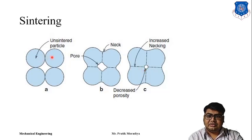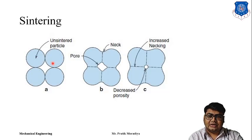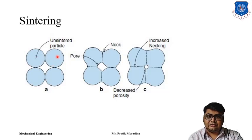Why does sintering occur? Because we are providing energy that accelerates the expansion of the grain boundary. Normally, we provide pressure and temperature for sintering to occur. The temperature required is from half the melting point up to the melting point, and if we apply pressure, the sintering process can happen.